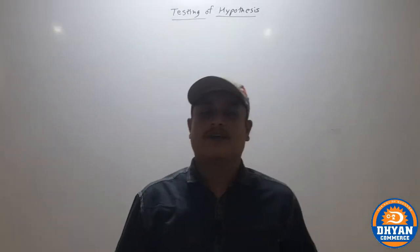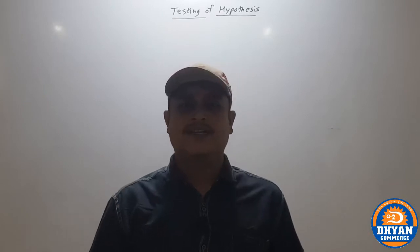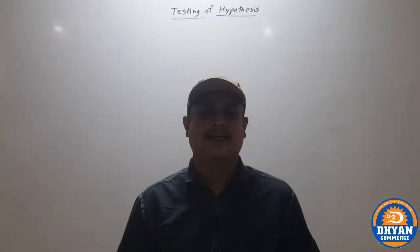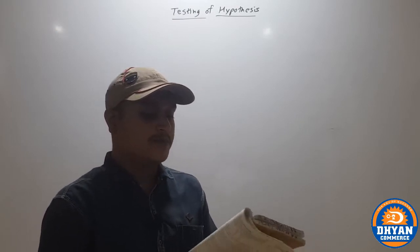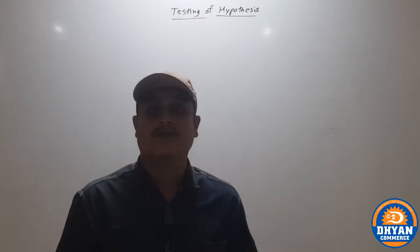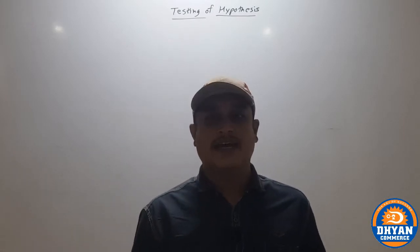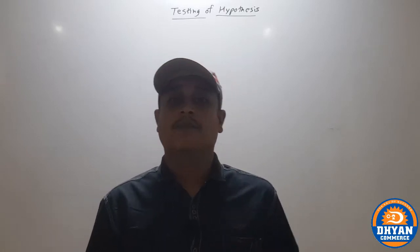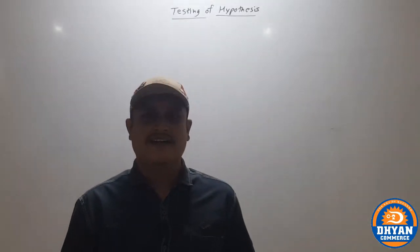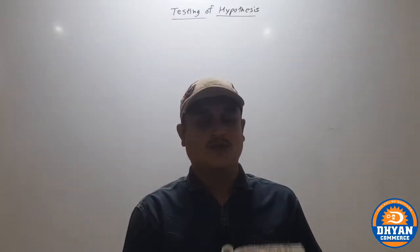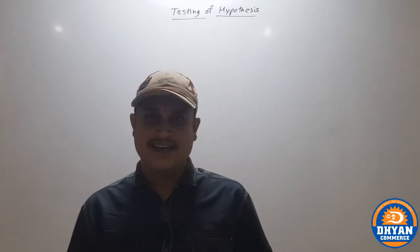Jai Mataji! Students, in testing of hypothesis, we are studying the large sample test. We completed the first method in the last lecture, and today we will observe sum number 4, which has data for a one-tailed test. To identify a one-tailed test, observe the question: if only one part of a comparison or claim is given, it is a one-tailed test. Here on page number 28, exercise 2.2, we have a one-tailed case.